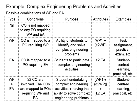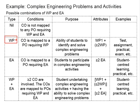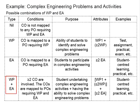The same concept applies and links to the two combinations here. When there is a course outcome mapping to the program outcome requiring complex engineering problems, then you will have complex engineering problems. When you have a course outcome mapping to the program outcome requiring complex engineering activities, then you need to provide complex engineering activities. What about situations where both complex engineering activities and complex engineering problems happen concurrently?